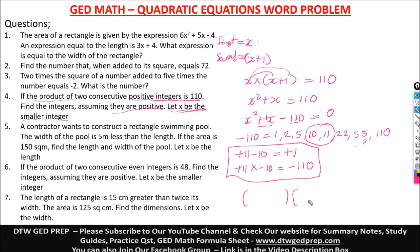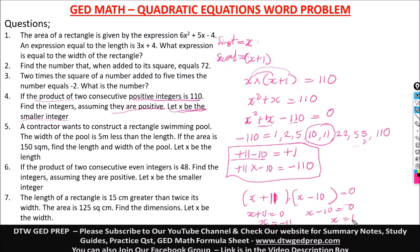We open two parentheses: since the coefficient of x is 1, we get (x + 11)(x - 10) = 0. Setting each to zero: x + 11 = 0 gives x = -11, and x - 10 = 0 gives x = 10. Since the integers are positive, x = 10. So our first integer is 10 and our second integer is 10 + 1 = 11.